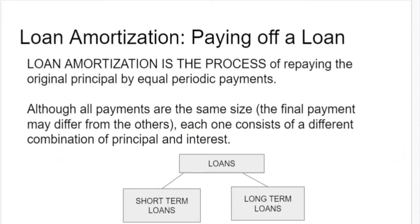Other types of loans out there tend to be longer-term loans. Mortgages are a classic example of a longer-term loan. The only real difference between a mortgage and a regular loan is the fact that the mortgage has some piece of property — what we call real property in law — attached to it, such as a house or a building. But the concepts for both of them are exactly the same.